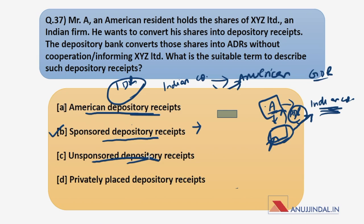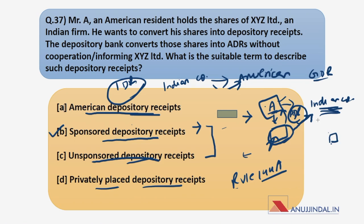By now you must have guessed the answer. Rule 144A depository receipts are special ADRs that can only be sold to qualified institutional buyers as a private placement and are not subject to the same rules and regulations as regular ADRs. In our question, the foreign depository issues ADRs to Mr. A without any formal agreement with XYZ Ltd, so the answer is unsponsored depository receipts.